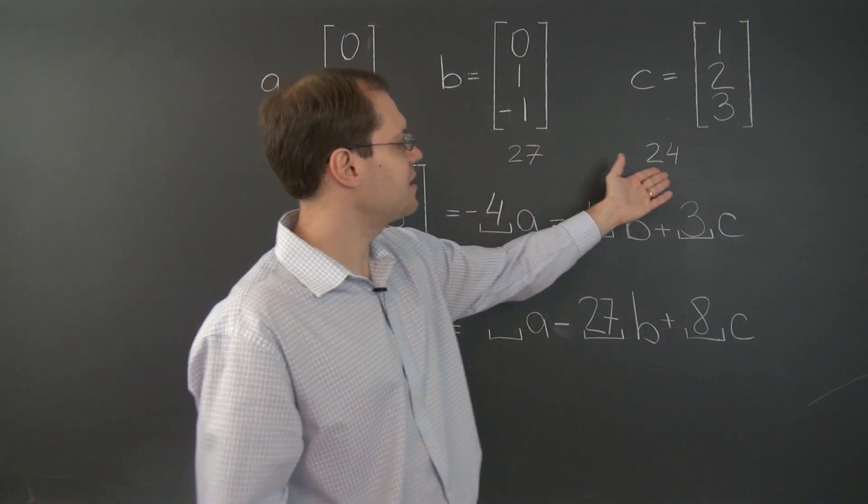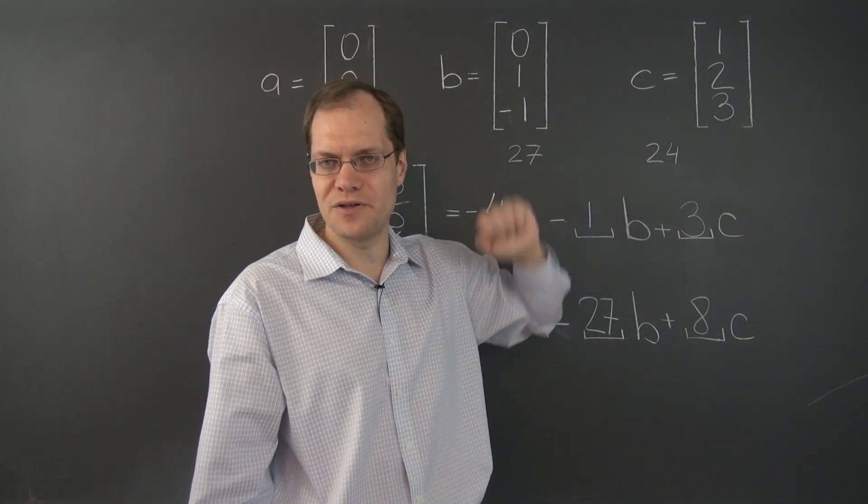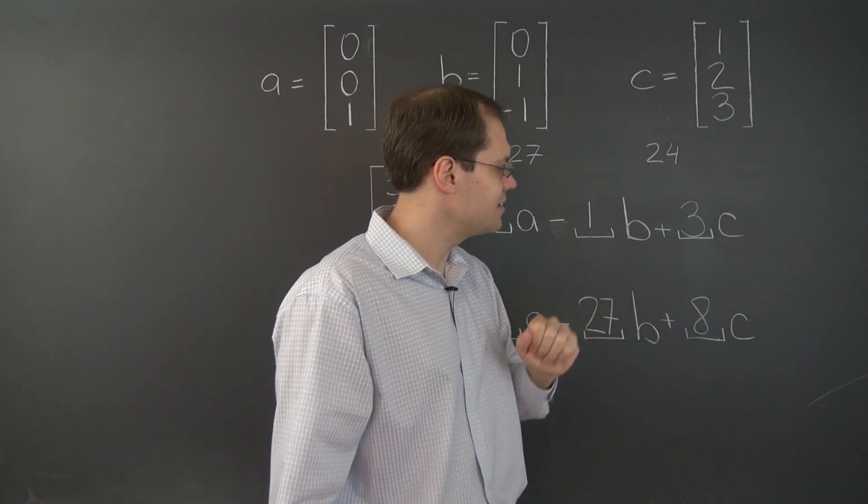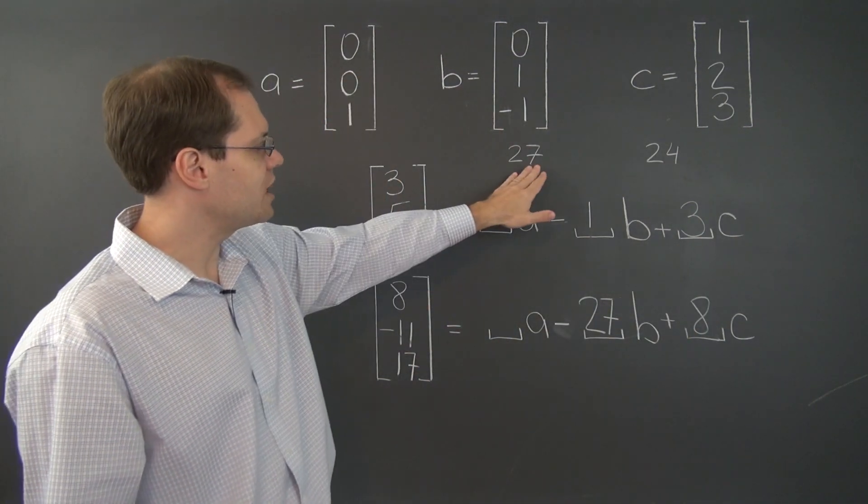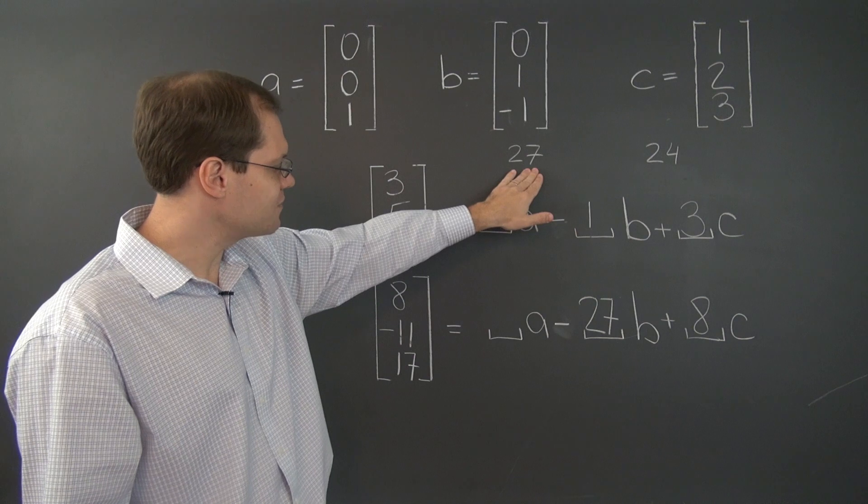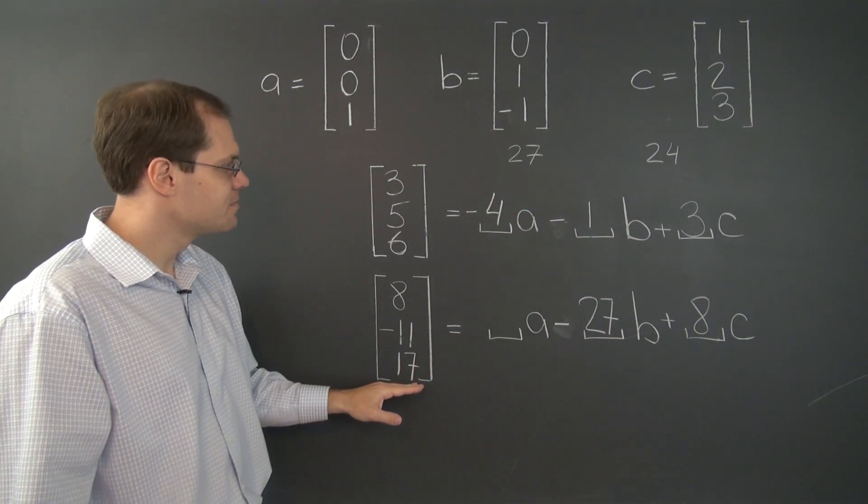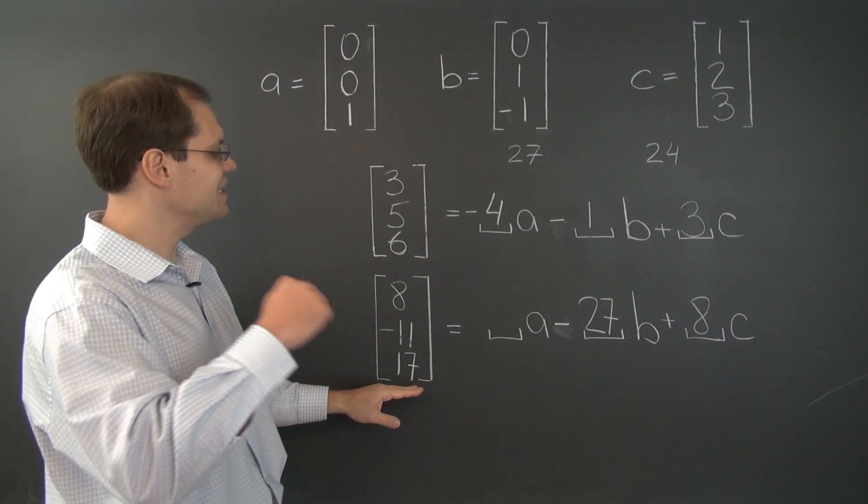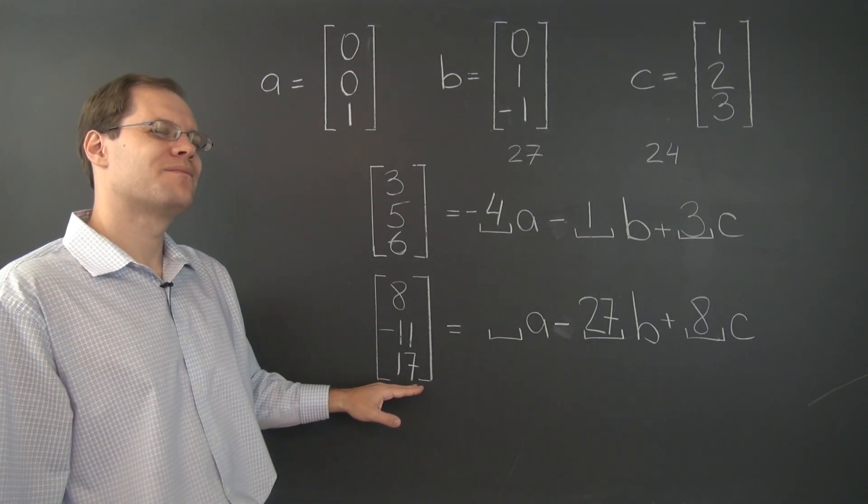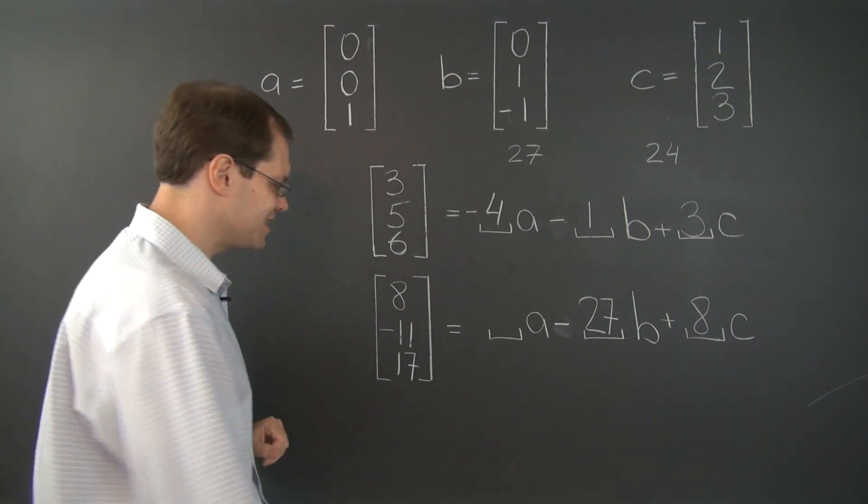So the combined contribution is fifty-one from the first two vectors that were participating in the linear combination. So we have fifty-one, and we have to get from fifty-one to seventeen. Which I believe is a jump of negative thirty-four. Thirty-four, that's correct. So, this last coefficient is negative thirty-four.